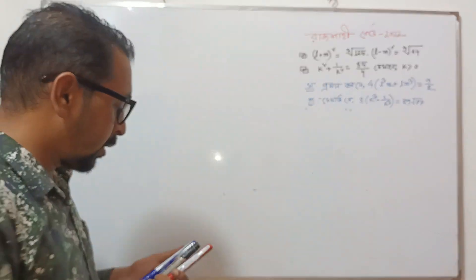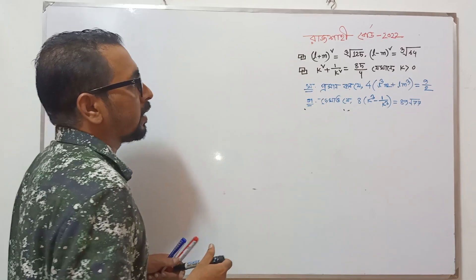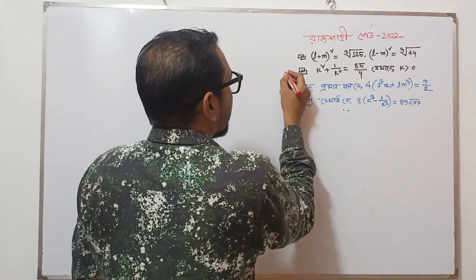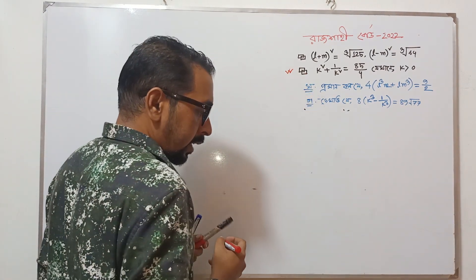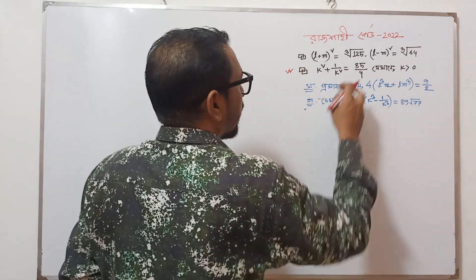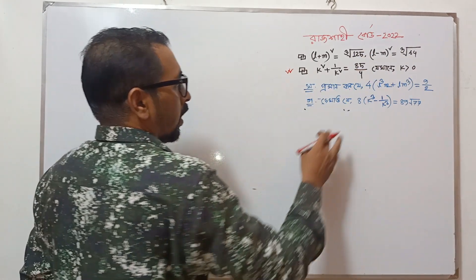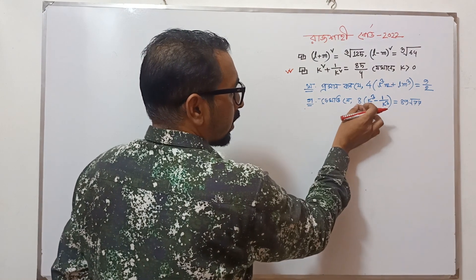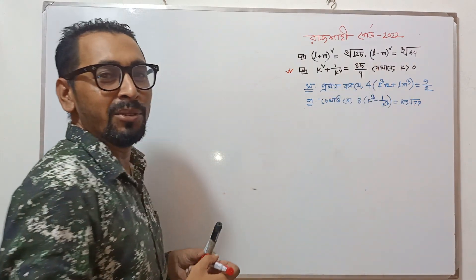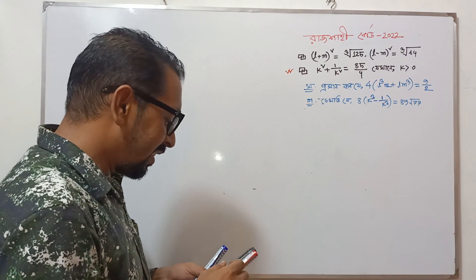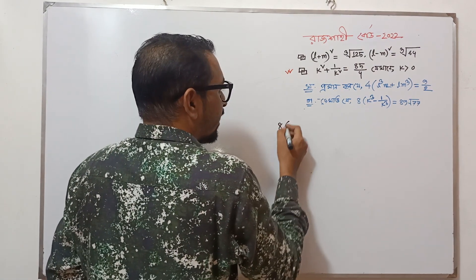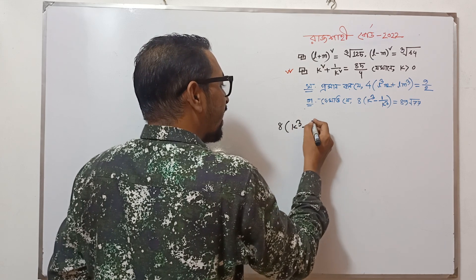When you solve this problem: k² plus 1 divided k² equal to 85 divided 4, and the problem is that 8 into k³ minus 1 divided k³ equal to 99 over 77.